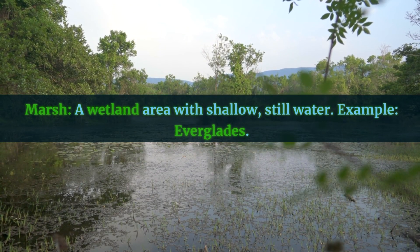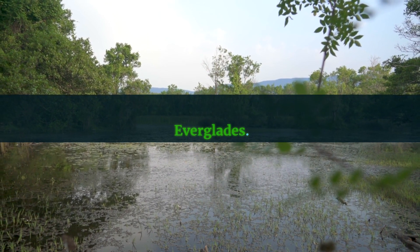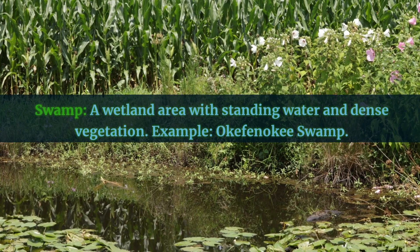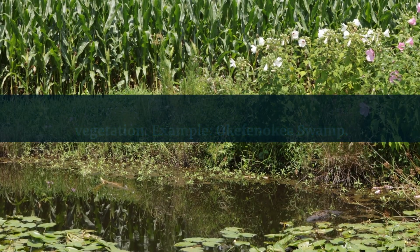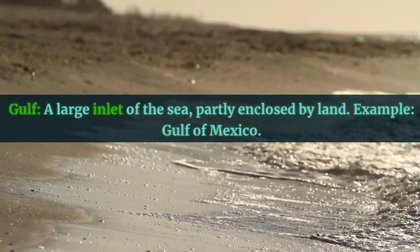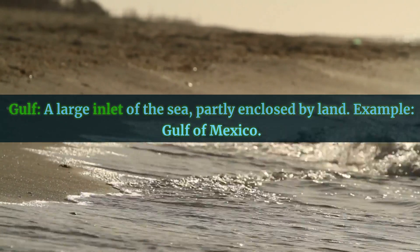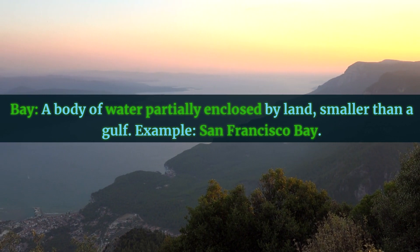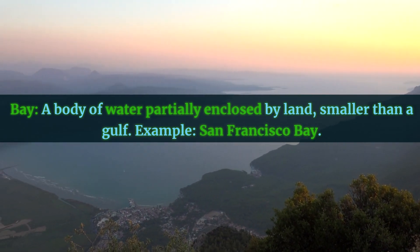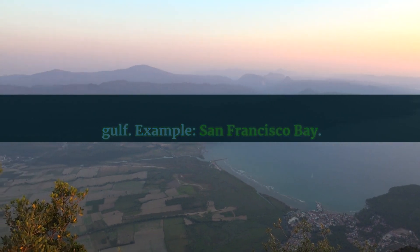Marsh: a wetland area with shallow, still water. Example: Everglades. Swamp: a wetland area with standing water and dense vegetation. Example: Okefenokee Swamp. Gulf: a large inlet of the sea, partly enclosed by land. Example: Gulf of Mexico. Bay: a body of water partially enclosed by land, smaller than a gulf. Example: San Francisco Bay.